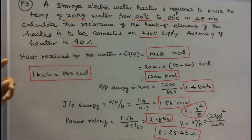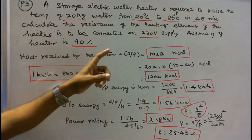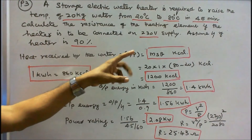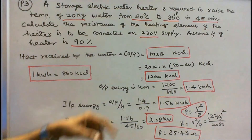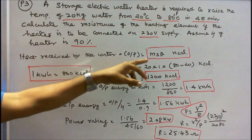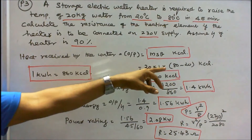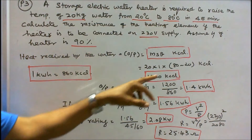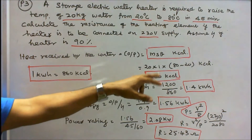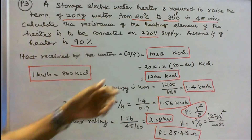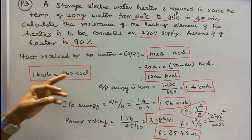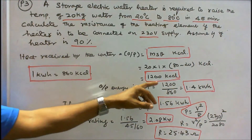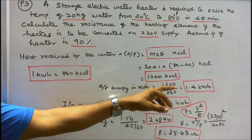First, find heat received by the water (output) = M × S × θ, where θ = T2 − T1. M = 20, S = 1, θ = 80 − 20 = 60. So output = 1200 kcal. Converting: 1 kWh = 860 kcal, so output energy = 1200 divided by 860 = 1.4 kWh.